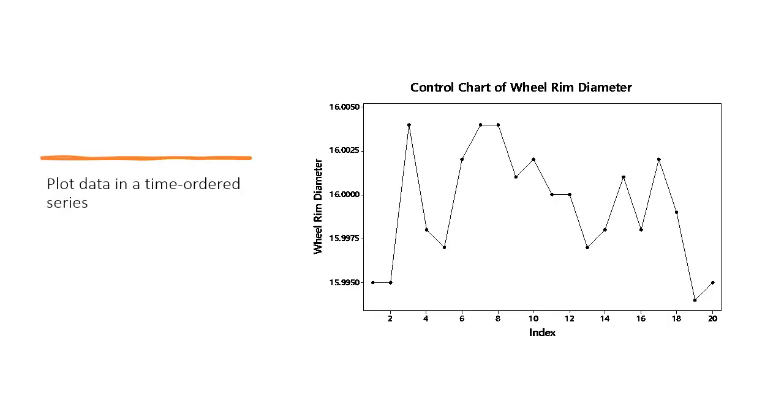First, we sample wheels from the process, measure their wheel rim diameter, and plot them in a time order series.